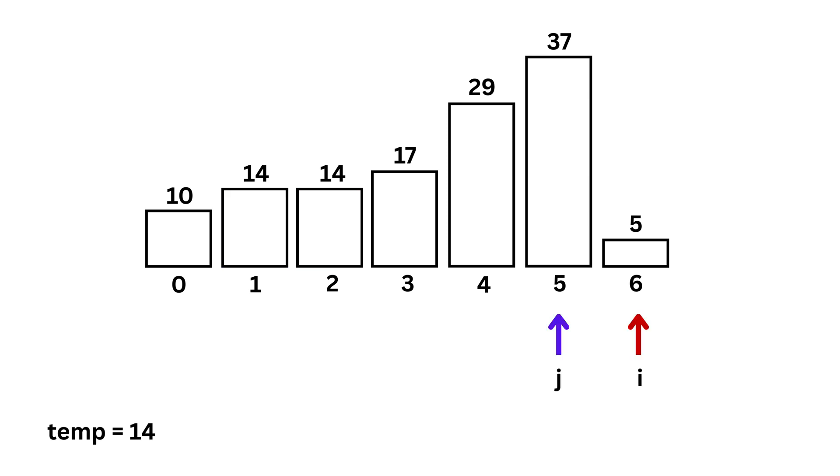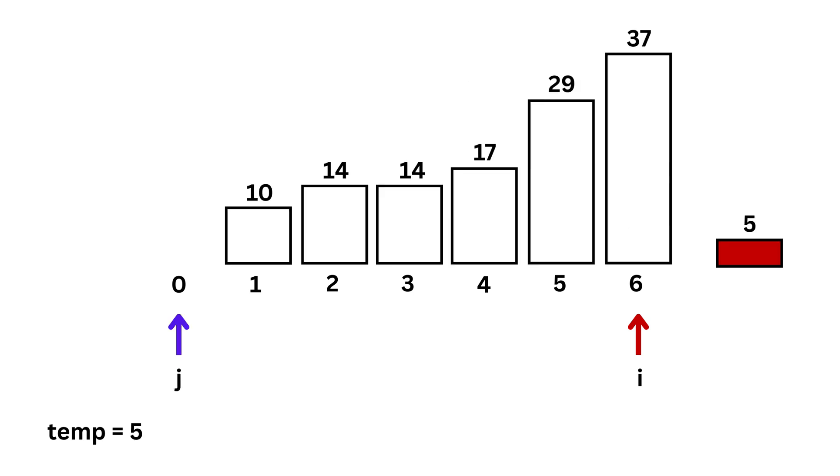Now, finally, i moves to position 6, and temp becomes 5. So, we know that it will shift all these values to the right by 1, and will be placed at the first position. And that's it. This way, you can see that we have our sorted list. That's the full idea of insertion sort.